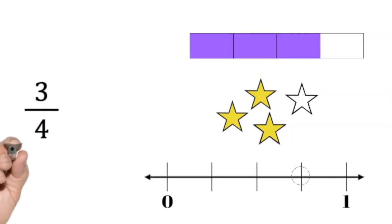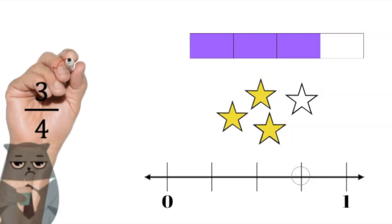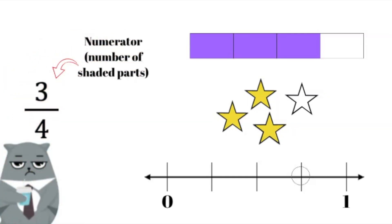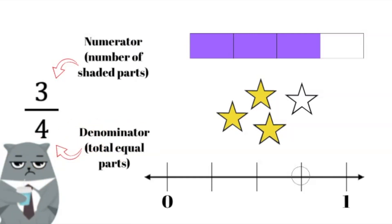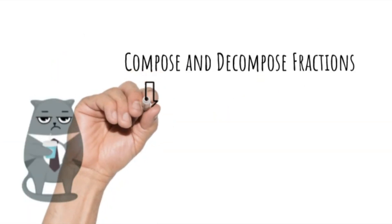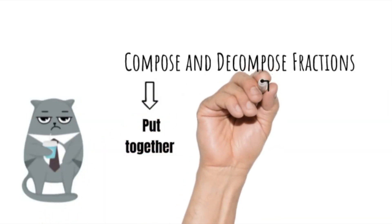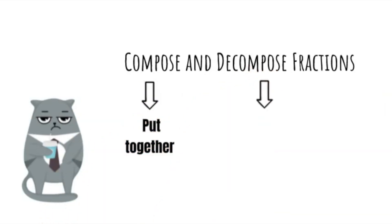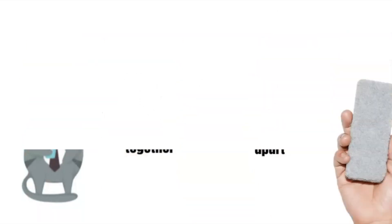All of these models show the fraction three-fourths. How do you know? The numerator represents three parts shaded, and the denominator represents the four total equal parts. When we compose fractions, we put them together. When we decompose fractions, we take them apart.